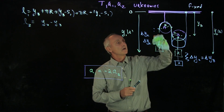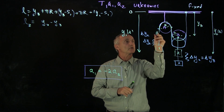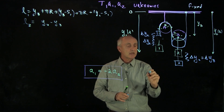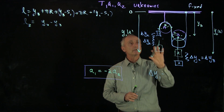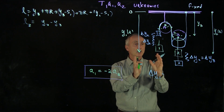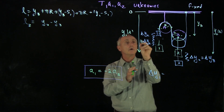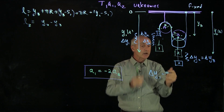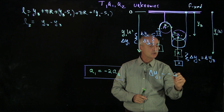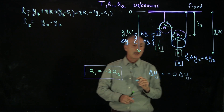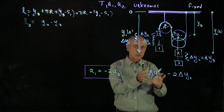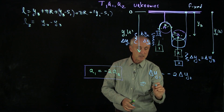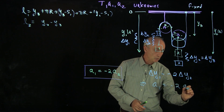So what we see here is that delta y1 is equal to — now notice, if 2 goes down by delta y2, then delta y1, which is this whole distance, is a negative quantity, and it's going upwards. And so we see that that's minus 2 delta y2. And if we took two derivatives of displacement and then look at the change in displacement, we would see that this implies that the acceleration of 1 is minus 2a2.